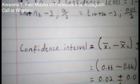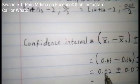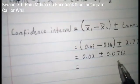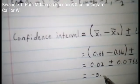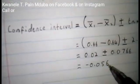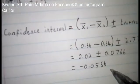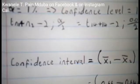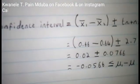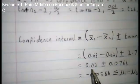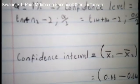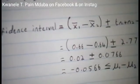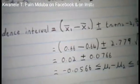Since we have two signs, the plus and the minus, we calculate both bounds. First: 0.02 minus 0.0766 equals minus 0.0566. This is the lower bound — the difference between two means. Then we add: 0.02 plus 0.0766 equals 0.0966. That is the upper bound.